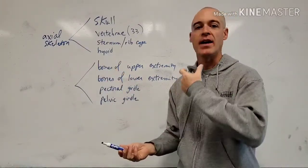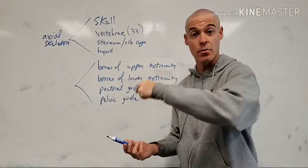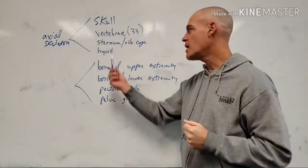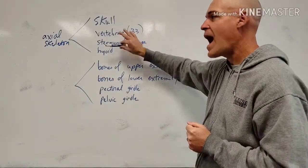And then, of course, that unique little bone that kind of looks like it's floating out in space. It's not attached to another bone directly. It sits right here in front of the cervical spine, the hyoid. So that would be our axial skeleton.